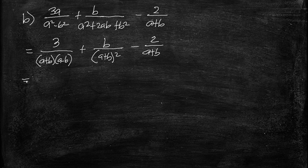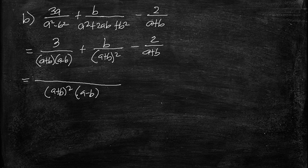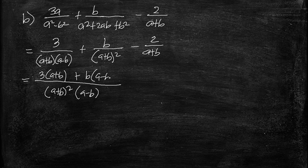The least common denominator is (a plus b) squared times (a minus b). Dividing the LCD by the first denominator leaves (a plus b), so we multiply 3a by (a plus b). Dividing by the second denominator leaves (a minus b), so we multiply b by (a minus b). For the third term, dividing the LCD leaves (a plus b)(a minus b).